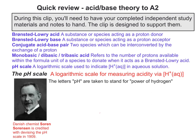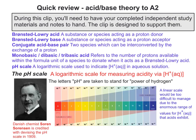It was Danish chemist Søren Sorensen who was credited with devising the pH scale in around 1909. The letters pH are assumed to stand for power of hydrogen because it is a logarithmic scale. A linear scale would be too difficult to manage — too big — because of the huge range of values for hydrogen ion concentration that all the different acids exhibit, from very strong to very weak.